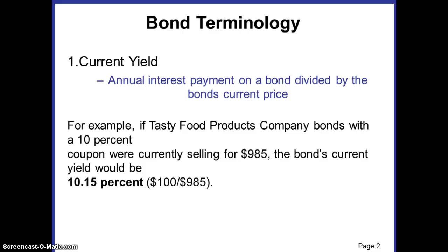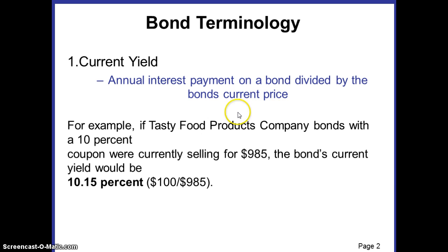In this video you will learn some important bond terminology. The first bond terminology is current yield. Current yield is the annual interest payment on a bond divided by the bond's current price. To explain this further, let's take an example: if Tasty Food Products Company bonds with a 10% coupon was currently selling for $985...